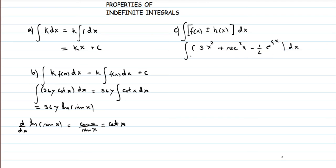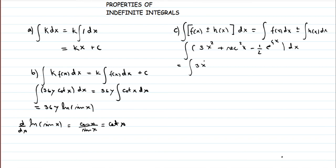So we can write this as the integral of f(x) dx plus or minus the integral of h(x) dx. In our case that gives us: the integral of 3x² dx, plus the integral of sec²(x) dx, minus the integral of (1/2)e^(4x) dx.